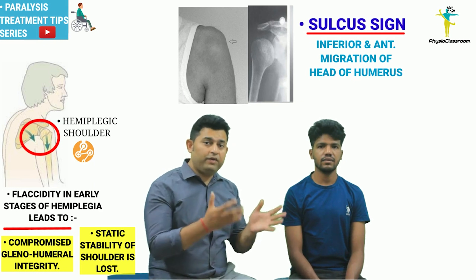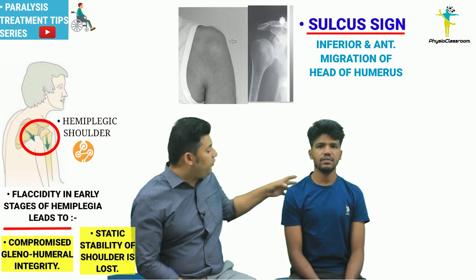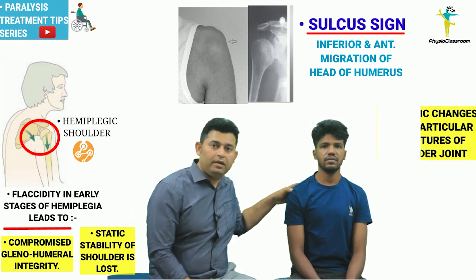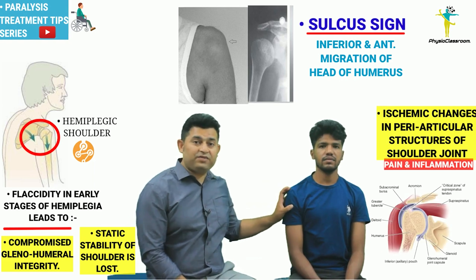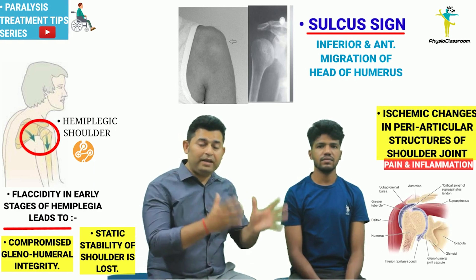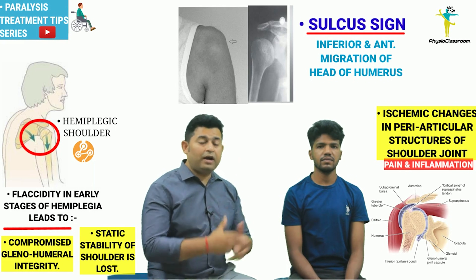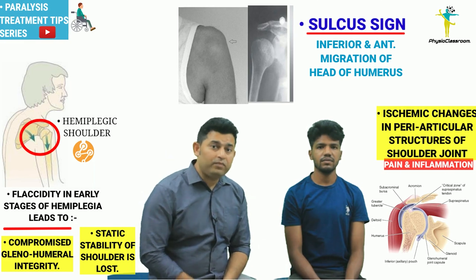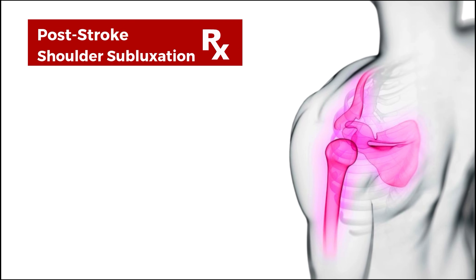This results in the inferior and anterior migration of the humeral head, which we can acknowledge by the presence of the sulcus sign. As a result, there is abnormal stretching in the periarticular structures, which undergo ischemic changes resulting in pain and inflammation.